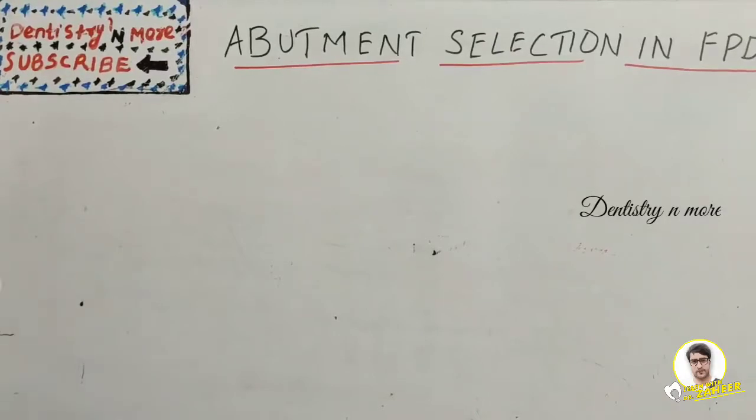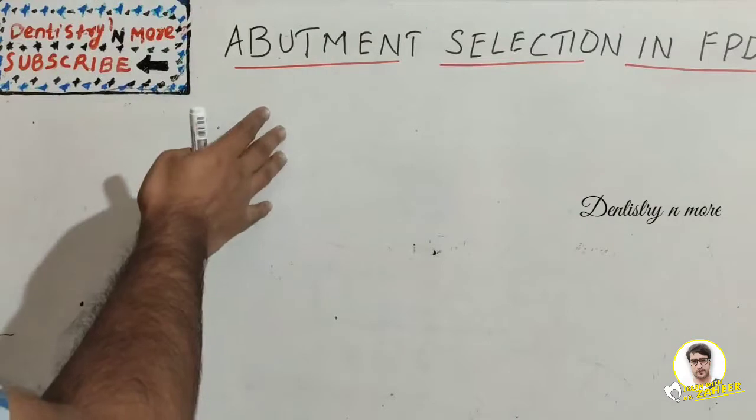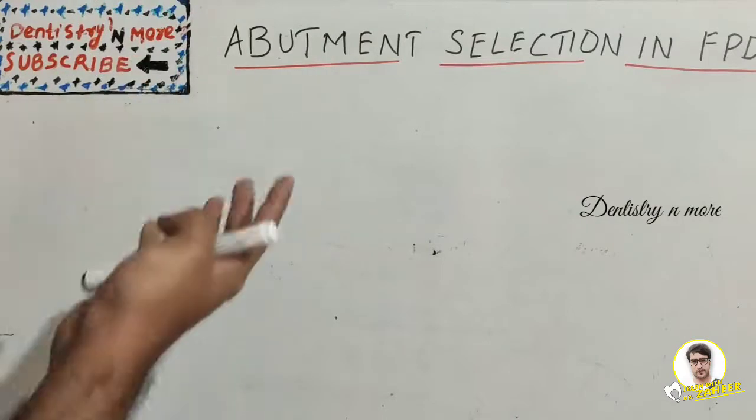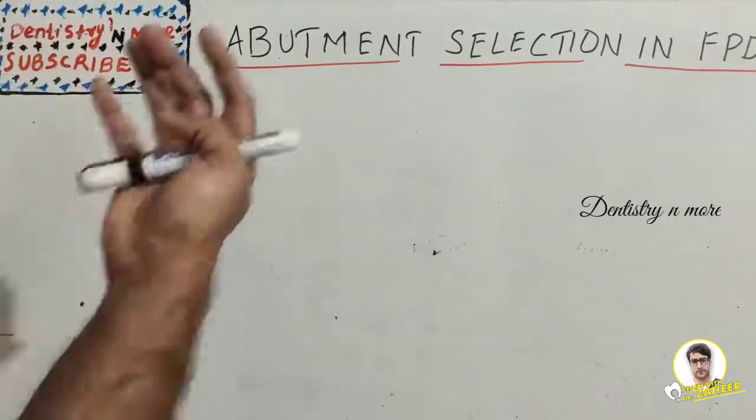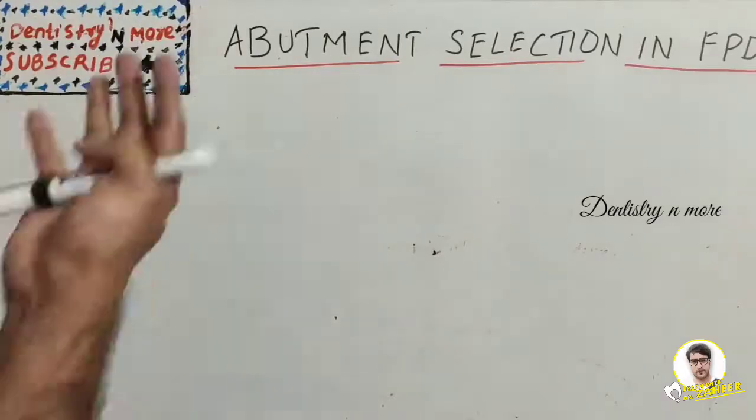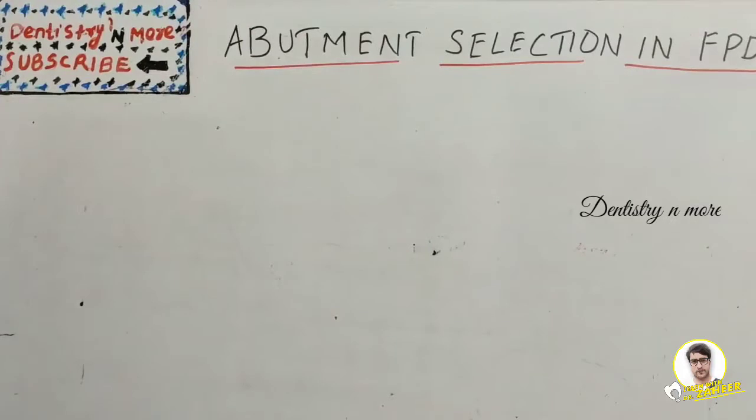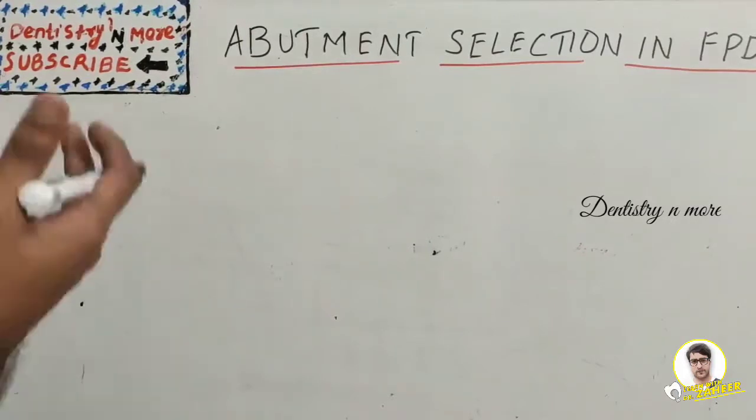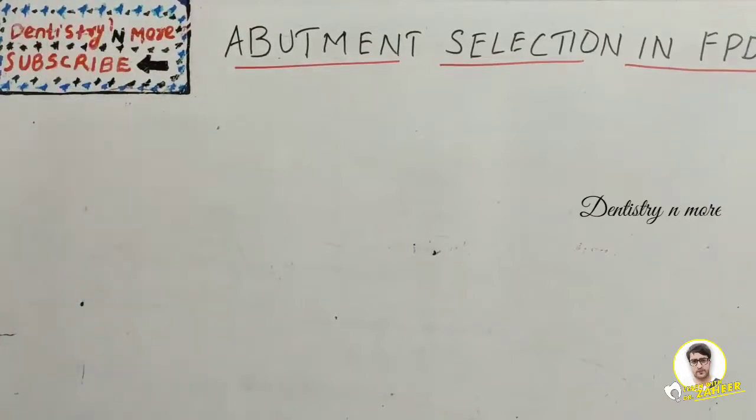As per GPT, the abutment can be defined as a tooth or a portion of a tooth, or that portion of an implant which is used for the support of a fixed or removable prosthesis. This abutment role is very crucial in accepting the load of FPD. If something happens to the abutment, if it is not able to withstand the occlusal force, the FPD will fail. There are many factors which determine the failure of an FPD with regard to abutment.